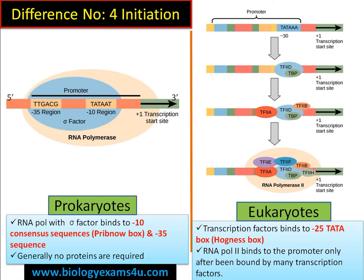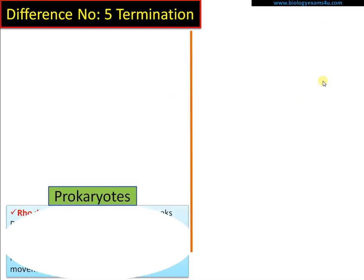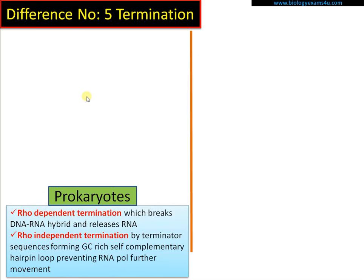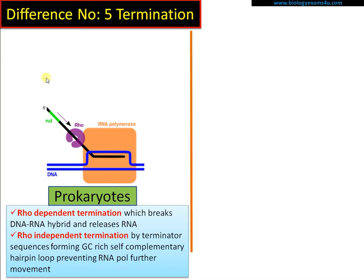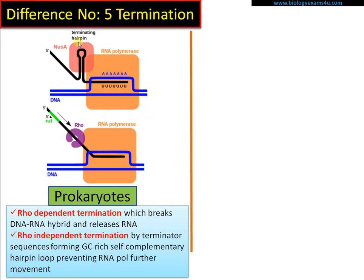Difference number five is regarding termination. In prokaryotes, there are two mechanisms. First is Rho-dependent termination — Rho is a helicase protein that binds to a sequence called the Rho utilization (rut) sequence on the RNA and ultimately disrupts the DNA-RNA hybrid, releasing the newly formed RNA. Second is Rho-independent termination — a GC-rich, self-complementary terminator sequence forms a hairpin loop structure, causing RNA polymerase to stop and release the newly formed RNA.